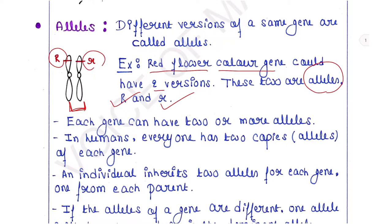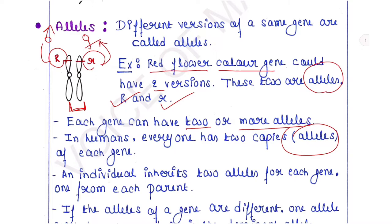Each gene can have two or more alleles. In humans, everyone has two copies of each gene — those are alleles. An individual inherits two alleles for each gene, one from each parent. So this capital R allele is inherited from the father, and this small r allele is inherited from the mother.